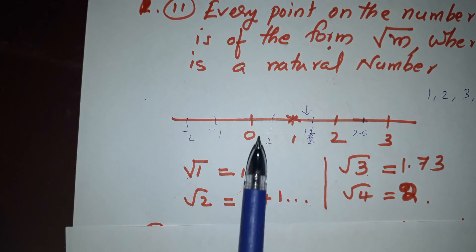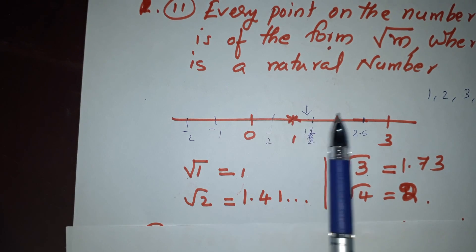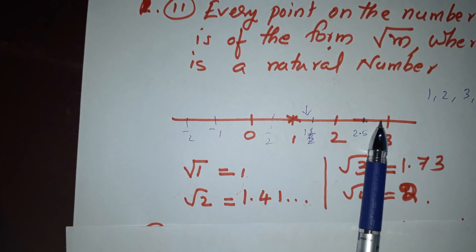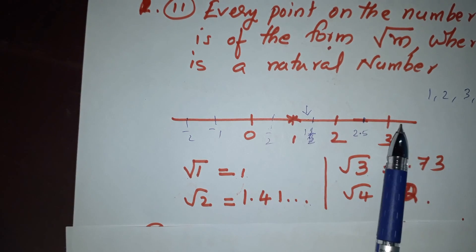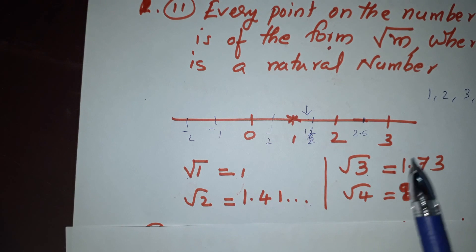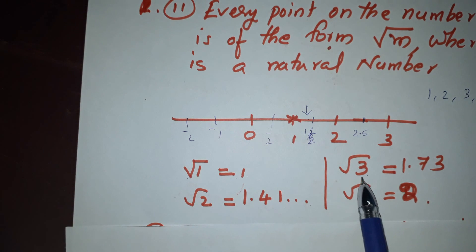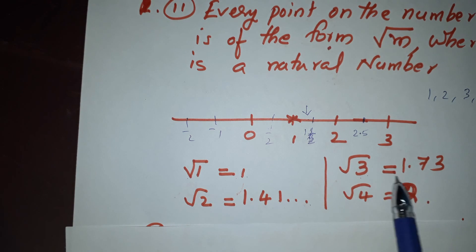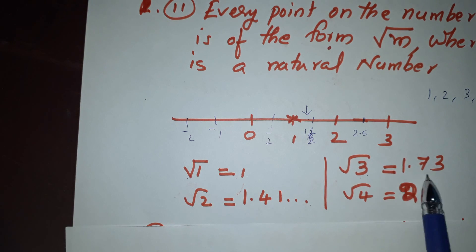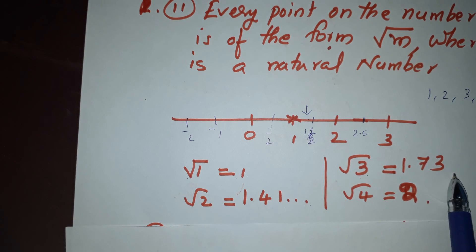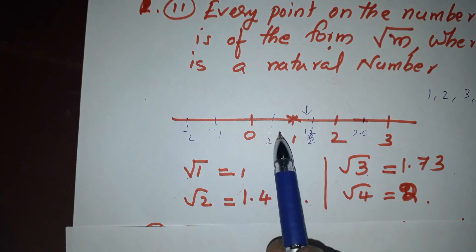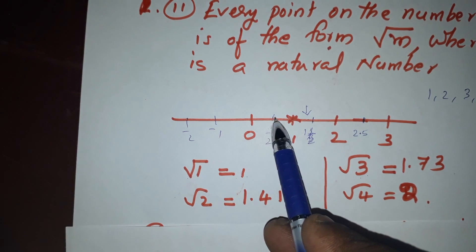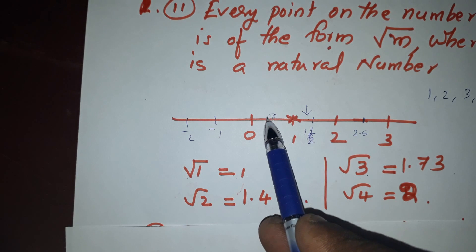Now we have to answer. √3 is 1.73. √4 is 2.